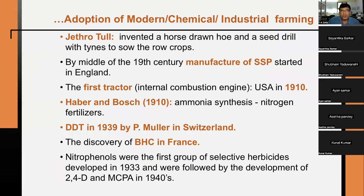Jethro Tull invented a horse-drawn hoe and a seed drill with tines, and tillage operations started from there. By the middle of the 19th century, single super phosphate (SSP) was manufactured.